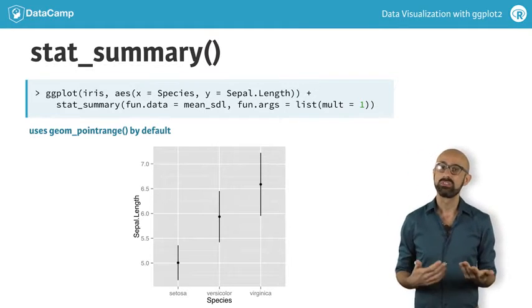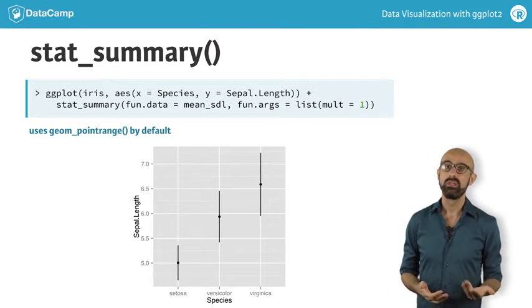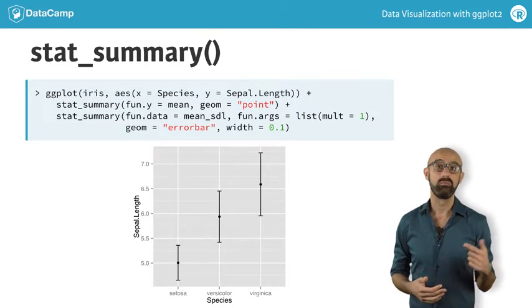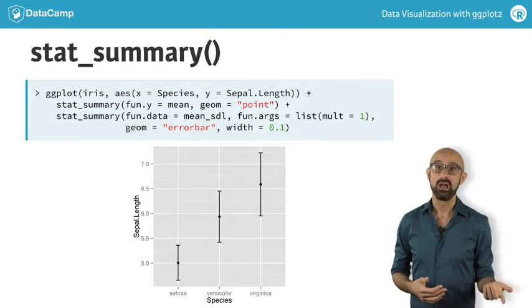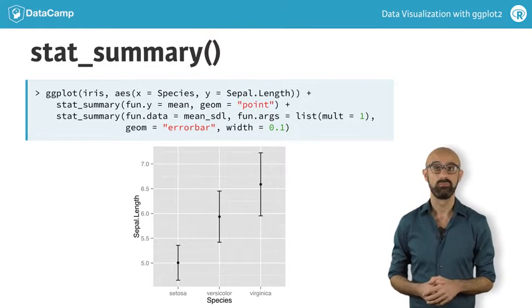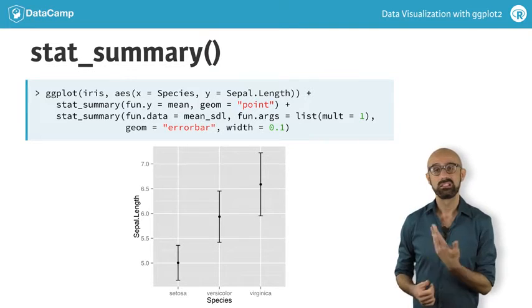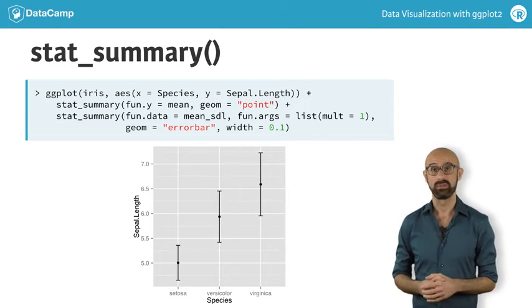If we wanted a more typical error bar style plot, we can independently plot the mean and use the point argument for the geom and again call mean_sdl, but this time use the error bar geom. Here, we can also set the width of the error bars. This gives us a typical plot in a scientific publication.